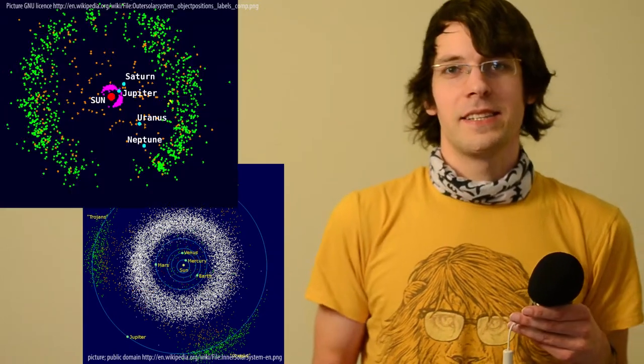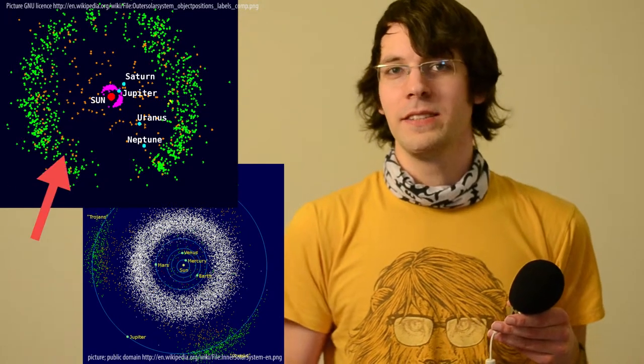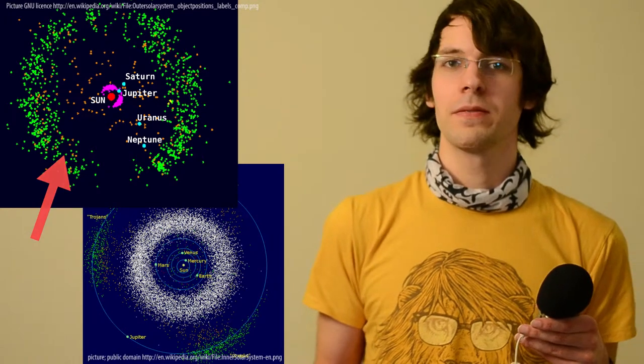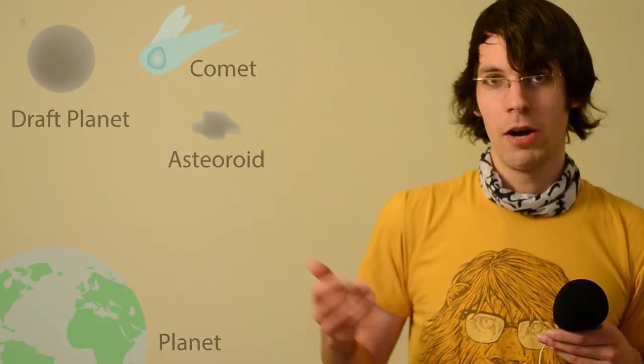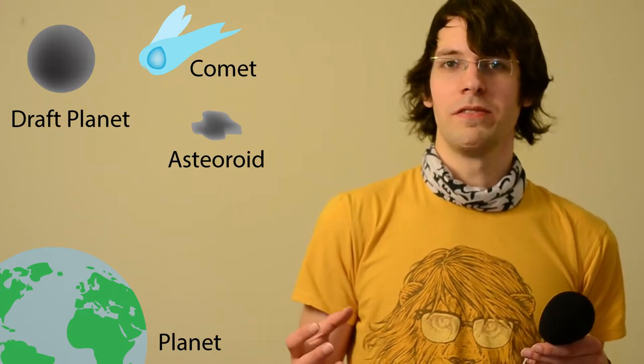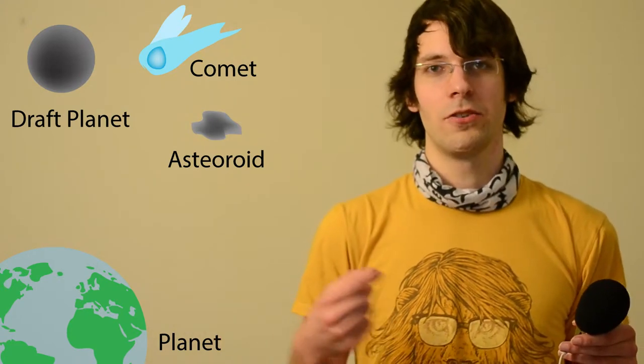You find the asteroid belt between Mars and Jupiter. And then at the edge of our solar system, you will find the Kuiper belt, which is again also made of a lot of asteroids. However, then we also have some comets. Those are from far away most of the time, and they're not made of rock — or at least only partly of rock — but most of it is actually ice.